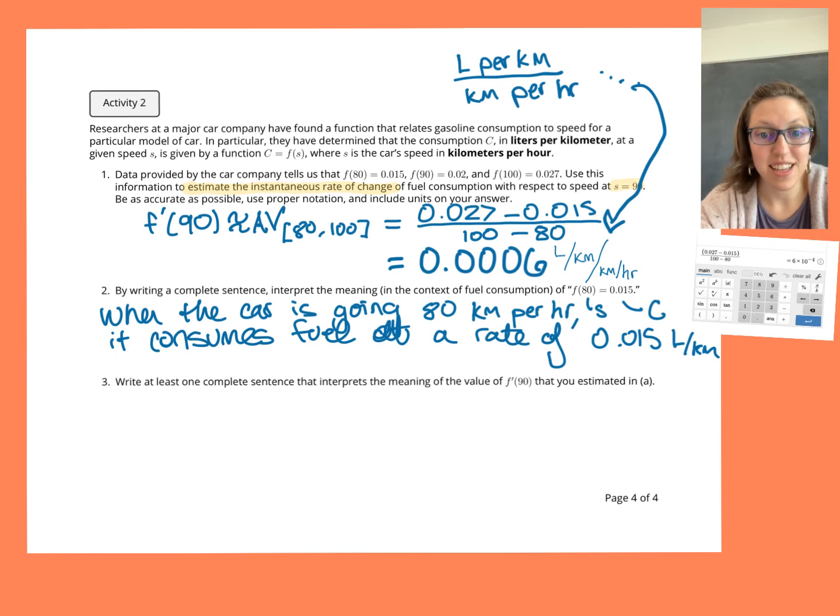Okay. So what we found was that at a speed of 90, right, at a speed of 90 kilometers per hour, the rate of fuel consumption is changing by 0.0006 liters per kilometer per kilometer per hour. Okay. So think of that as if we moved from going 90 kilometers per hour to going 91 kilometers per hour, our fuel consumption, we'd expect our fuel consumption to change by 0.0006 liters per kilometer. That kind of makes sense. It's a pretty small change, right? Okay. Okay. Let's see if we can write that down.